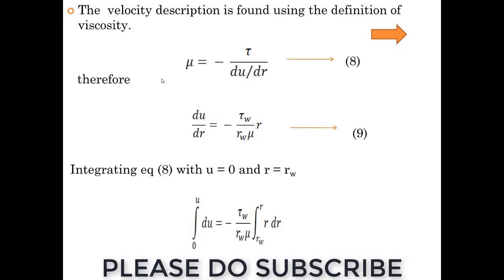When you are trying to have velocity description which is mu equals minus tau W times tau by du by dr, or tau W equals mu times minus du by dr because r is from the wall. If it is from the center, if you consider the r, then it is plus.